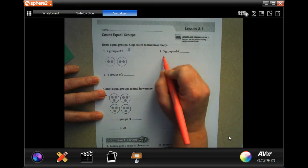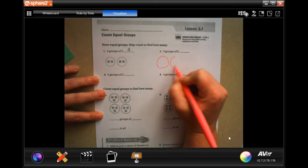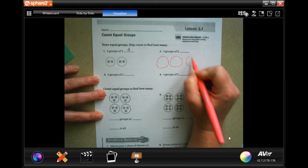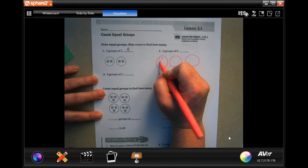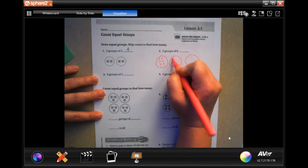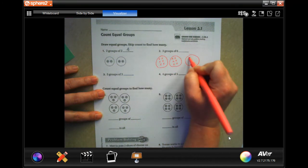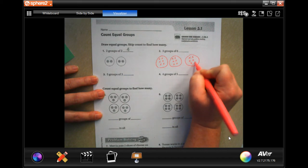So three groups. I'm going to draw one, two, three groups, and three groups of six. So I'm going to go one, two, three, four, five, six, one, two, three, four, five, six, and one, two, three, four, five, six.